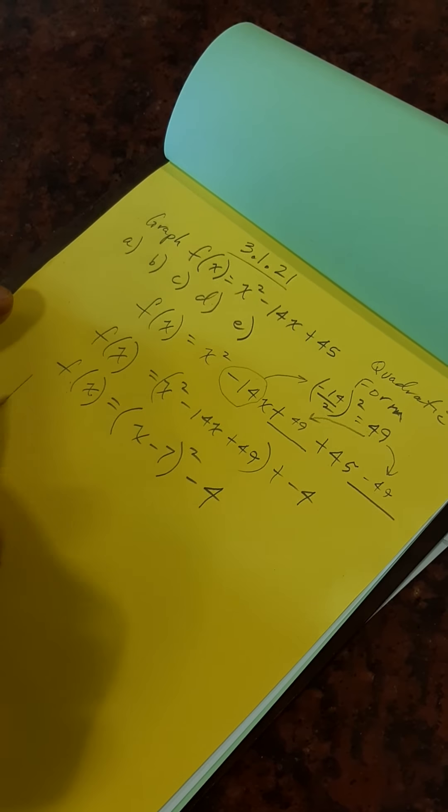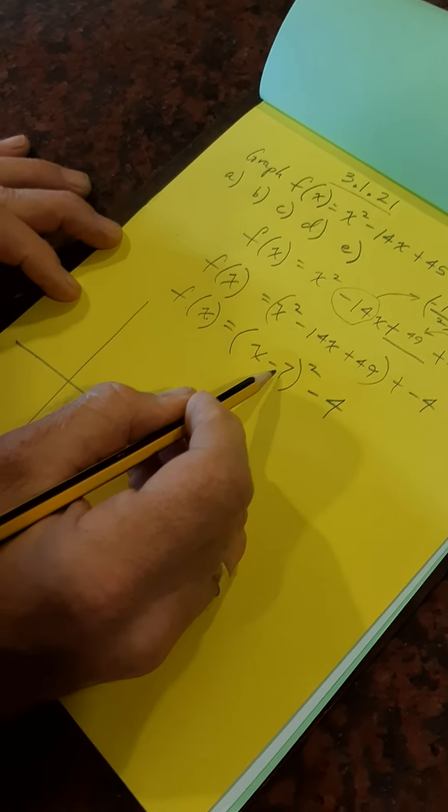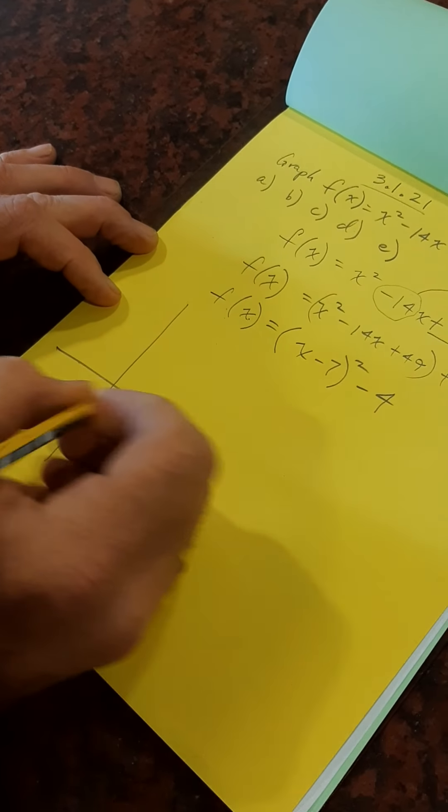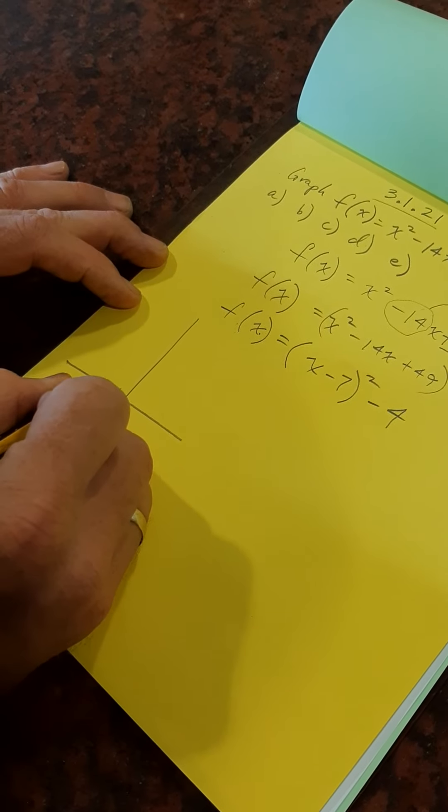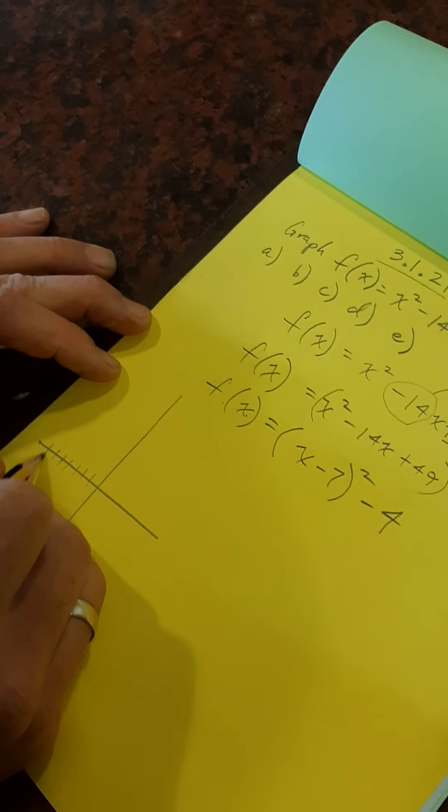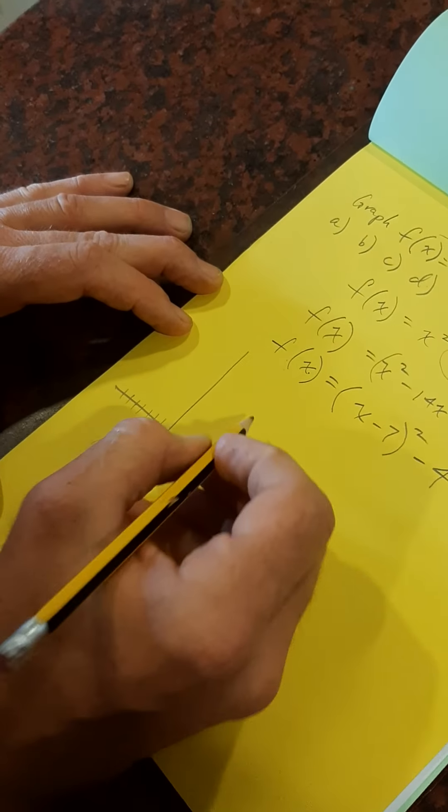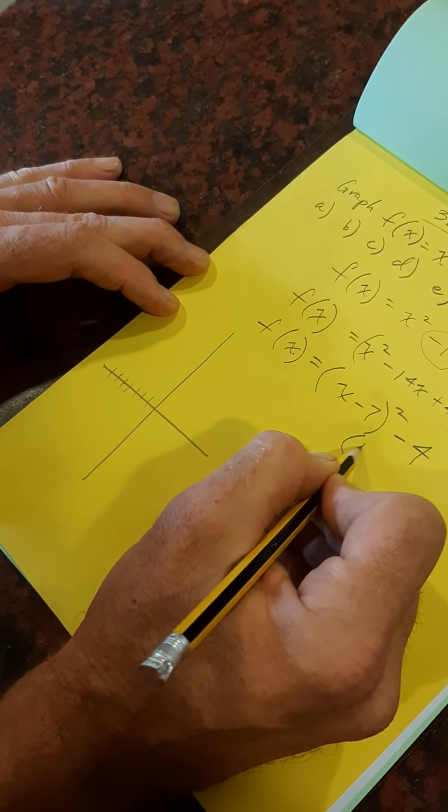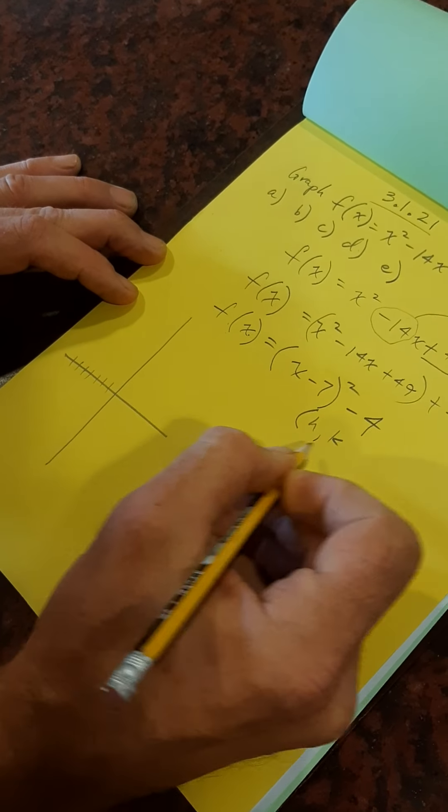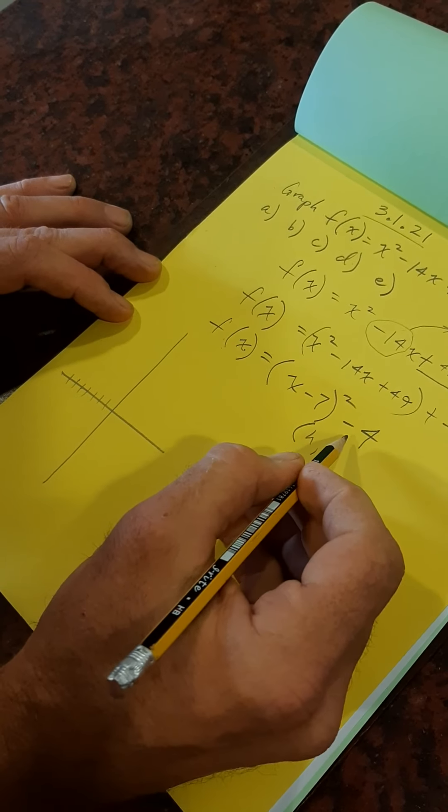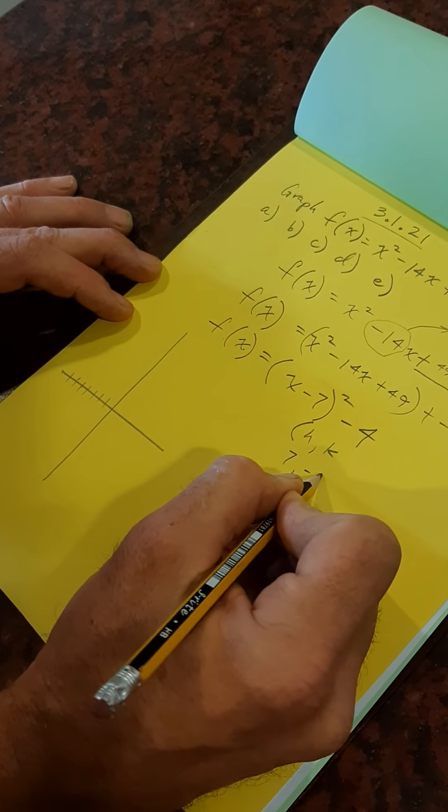Now we've got it. Now we can graph that guy. We've got our h, k, minus h plus k. So we're going to be at minus 7. Minus 7, comma, oops, my bad. We're at plus 7. That's right. h, k, we're at 7 because minus h plus k, 7 comma minus 4.